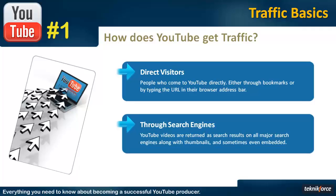In some search engines like Bing, videos are actually embedded so they can be played right from within the search engine, which makes them even more clickable. So search engines are a very important source of traffic for YouTube, and this is organic traffic.